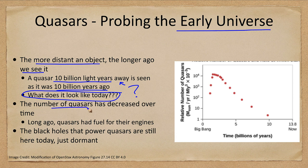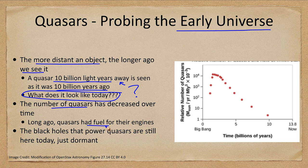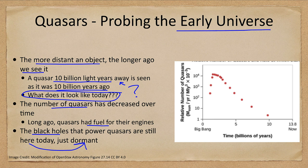The number of quasars has decreased over time. Shortly after the Big Bang there were 10,000 or more; after 10 billion years only a handful; and now none. Long ago, quasars had fuel from galaxy collisions throwing material into the accretion disk around the black hole. Those black holes don't go anywhere — they are still at the centers of galaxies today, just dormant because they're not being fed. When given more material, they can sometimes be seen as active galaxies.